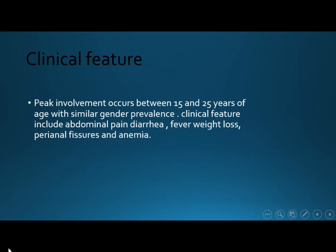Clinical features: as it is a chronic disease, it's a relapsing and remitting disease — it goes off and on. Peak involvement occurs between 15 to 25 years, so it's a young disease, but there is also a second peak incidence around 60 to 70 years of life. Clinical features include abdominal pain, diarrhea, fever, weight loss, fissure, perianal fissure, and anemia.